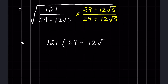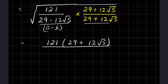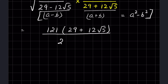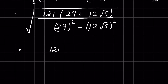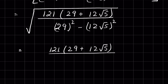The denominator is in the form (a - b)(a + b), which equals a² - b². So it becomes 29² - (12√5)². Under the square root we have 121 × (29 + 12√5) divided by (29² - (12√5)²). Now 29² = 841, and (12√5)² = 12² × 5.